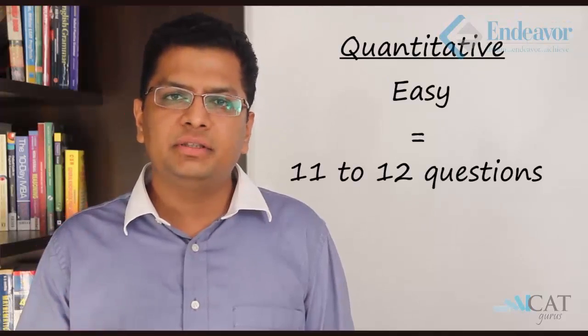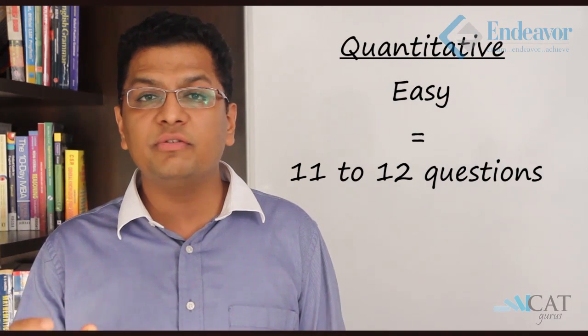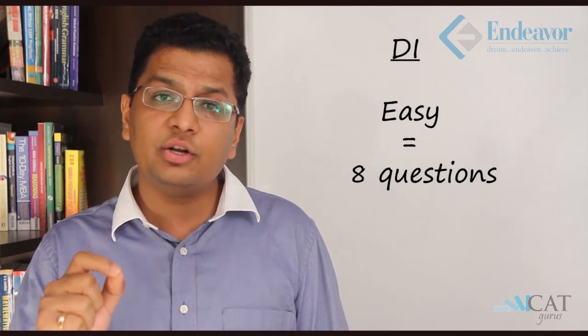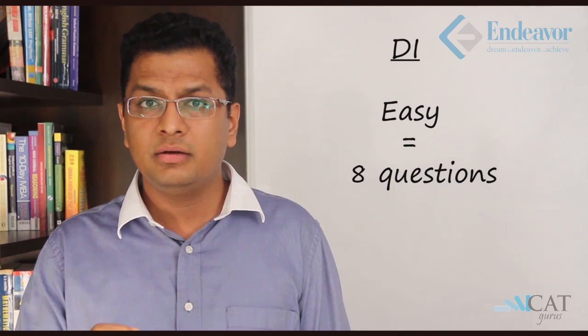In a quant section, typically there are 11 to 12 easy questions out of the 20-21 questions. So 11 to 12 easy in quant. In DI, however, 8 questions normally are easy. Easy does not mean they are very very simple. The toughness or the main thing in DI is the calculation. It requires a lot of calculation. You have to be very clear in DI that calculation has to be there. You can't avoid it.